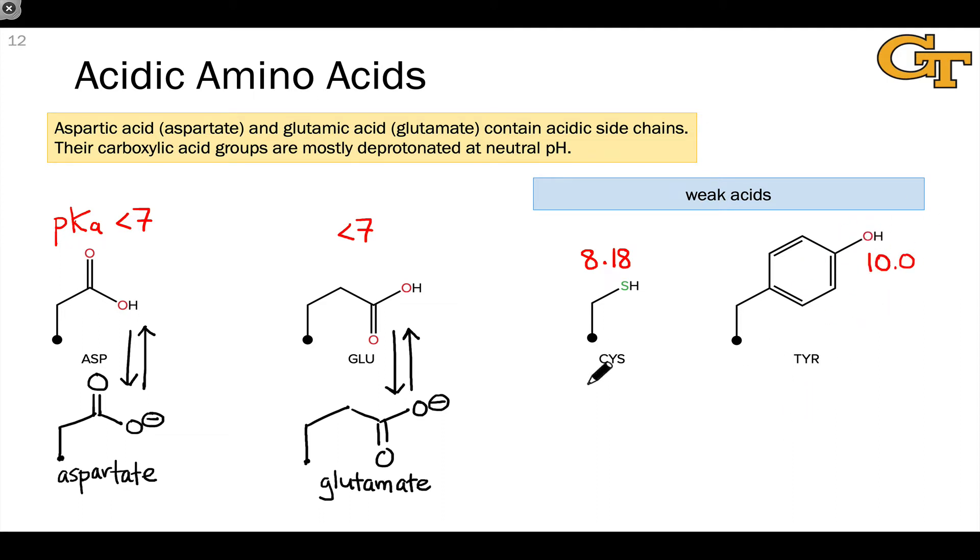Like aspartic acid and glutamic acid, these pKa's can be modulated up or down, and when they're modulated down to relatively acidic, relatively low values, we can see the conjugate base ionization states of these coming in.